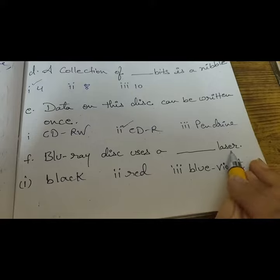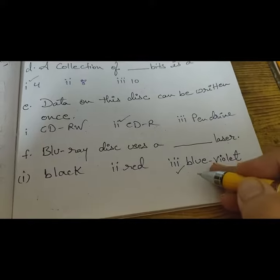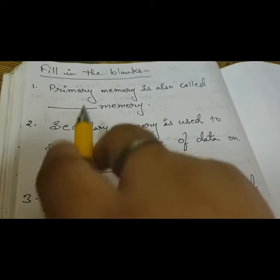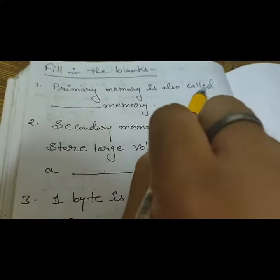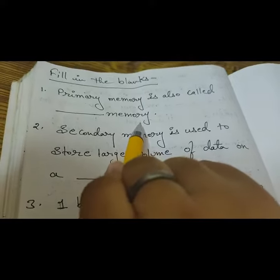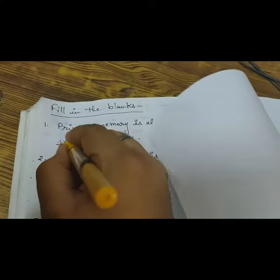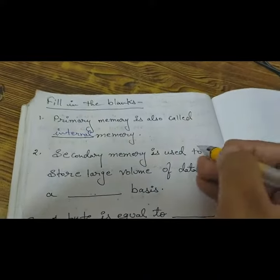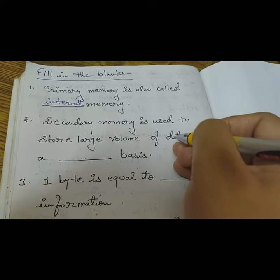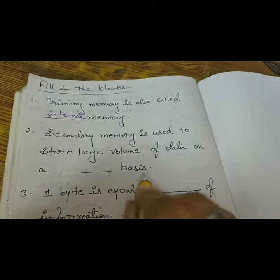Let's do the exercise. Fill in the blanks. Primary memory is also called internal memory. Secondary memory is used to store large volume of data on a permanent basis.